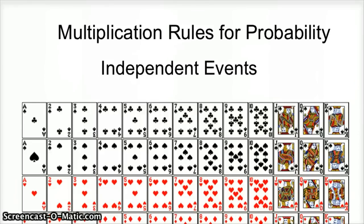Okay, multiplication rules for probability. The key to this one is the word and. Let me write that up there. If you see or with probability, that generally means addition, and the word and means multiplication.